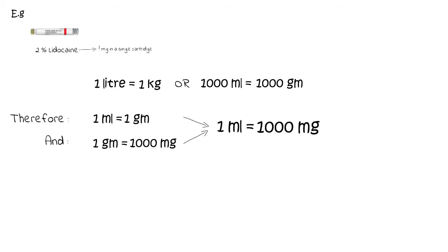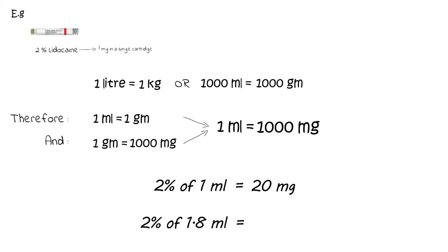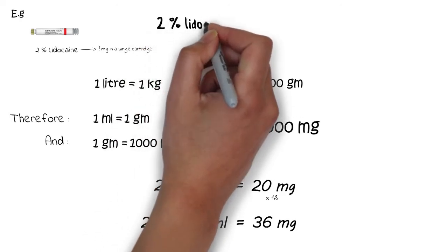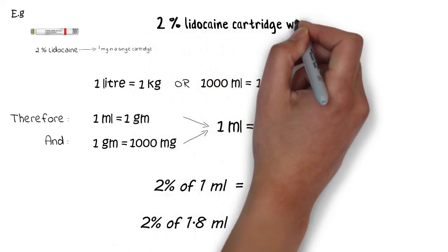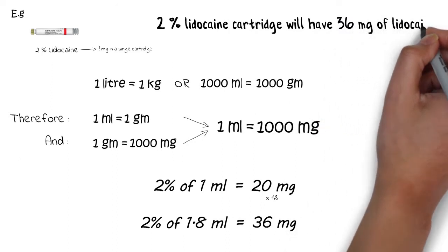So if this is clear, the rest of the calculations are very straightforward. Since 1 ml is equal to 1000 mg, then 2% of 1 ml will be 20 mg. Now since a cartridge contains 1.8 ml of solution, to calculate 2% of 1.8 ml we simply multiply 20 by 1.8 and we get 36 mg. So a cartridge containing 2% lidocaine will have approximately 36 mg of lidocaine in it.